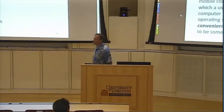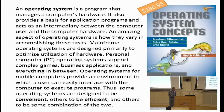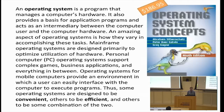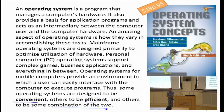Let's look at some definitions from textbooks. Here's one from what's sometimes called the dinosaur book — it's an awfully long one. An operating system is a program that manages a computer's hardware, and then there's lots of material about how different operating systems are, concluding that some are designed to be convenient, others to be efficient, and others some combination of the two. Should we run out and buy the $186.95 book that came up with this definition? Are there any operating systems not designed to be a combination of both — Windows Vista, perhaps?